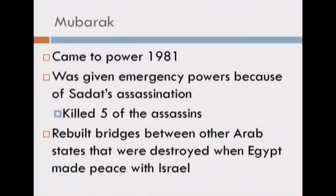Egypt is a really important case. Mubarak came to power in 1981 and was given emergency power straight up because of Anwar Sadat's assassination. He quickly executed five of the assassins, rebuilt bridges between other states that were destroyed when Egypt made peace with Israel. At Camp David, when Egypt recognized Israeli sovereignty, they were promptly kicked out of the Arab League, and the headquarters that were in Cairo were moved. Rebuilding the pan-Arab solidarity that Nasser championed was important for Mubarak. But he's also a significant ally of the United States — one of the first things he did was get Egypt readmitted into the League of Arab States.